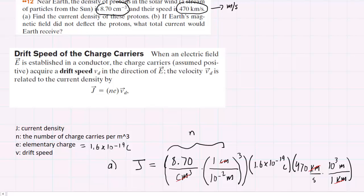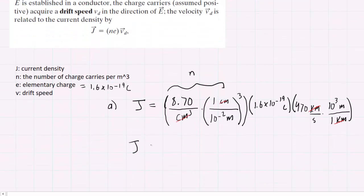And when you punch this into your calculator very carefully, you should get a value for the current density of about 6.54 times 10 to the minus 7.